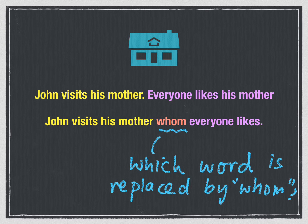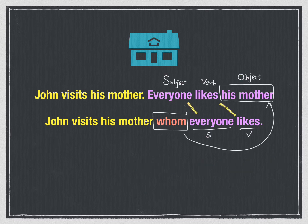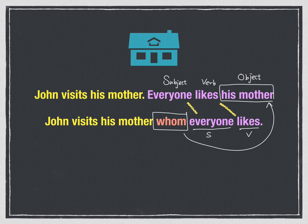As I've said before, the WH word is used to replace a noun or a pronoun, because it's a relative pronoun. So in this sentence, which word is replaced by whom? If you're careful enough, you should realize that whom in the relative clause actually replaces the object of the original sentence — 'his mother' — which is at the end of the sentence. After whom, we keep the same subject and the same verb.